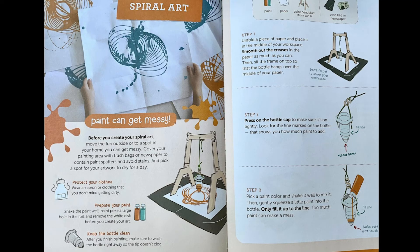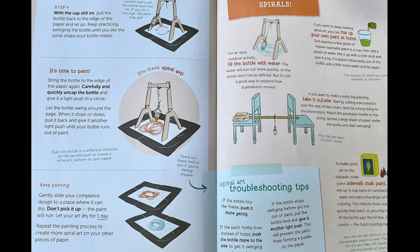Now you can create your spiral art. Step one: unfold a piece of paper and place it in the middle of your workspace. Smooth out the creases in the paper as much as you can, then set the frame so that the bottle hangs over the middle of your paper. You might want to cover your workspace by putting some newspaper underneath. Step two: press on the bottle cap to make sure it's on tightly. Look for the line marked on the bottle — that shows how much paint to add. Step three: pick a paint color and shake it well to mix it, then gently squeeze a little bit of paint into the bottle. Only fill it up to the line — too much paint can make a big mess. Step four: while the cap is still on, practice swinging your bottle in a circle.